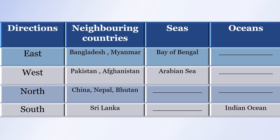On page 11 of your textbook, there is a table where we have to identify the countries and water bodies around India and complete the table. I have completed this table for you. The directions, neighbouring countries, and seas and oceans are: to the east — Bangladesh and Myanmar, with the Bay of Bengal; to the west — Pakistan and Afghanistan, with the Arabian Sea; to the north — China, Nepal and Bhutan; to the south — Sri Lanka and the Indian Ocean.